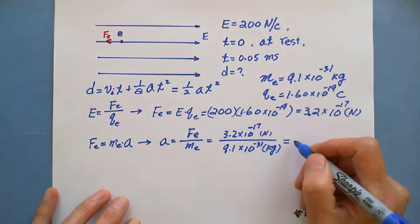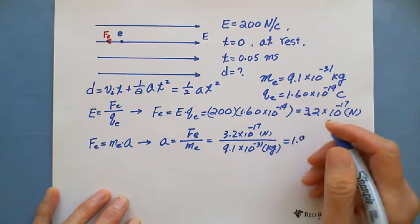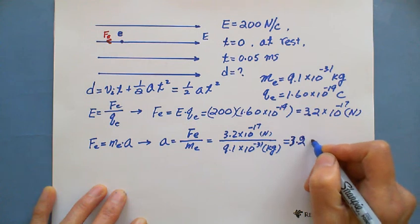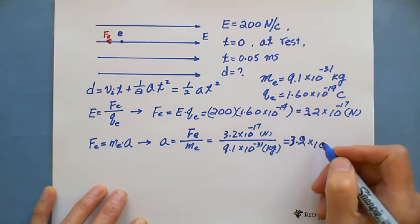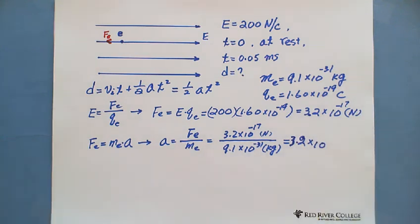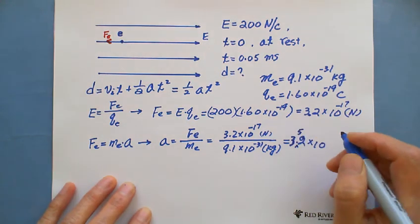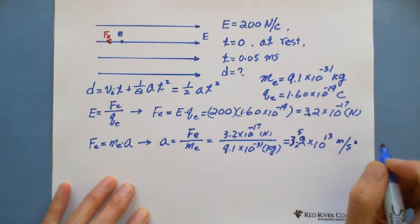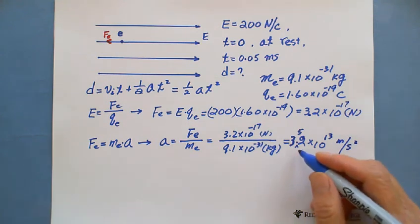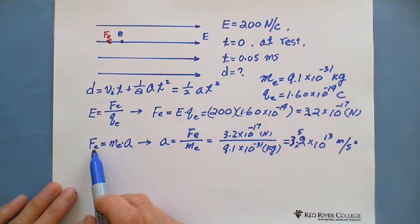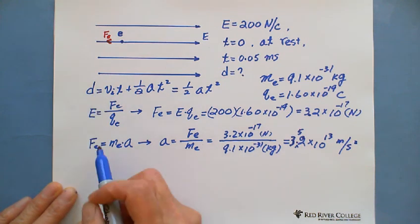Because this is negative 31 exponent, flip over to the top, become positive. So the answer, we got the acceleration, the pretty huge acceleration, which is 3.52 times 10 to the 13 meter per second squared. So this is the acceleration. So now, after you got the acceleration, then we can put this formula, find the displacement.